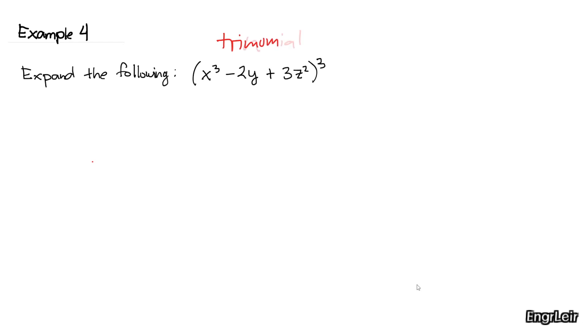Trinomial. So to use the binomial theorem, what I'll do is group the first two terms, the first two. So x cubed minus 2y plus 3z squared, then cubed. I'll take this as one term.